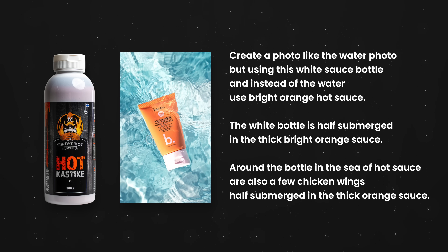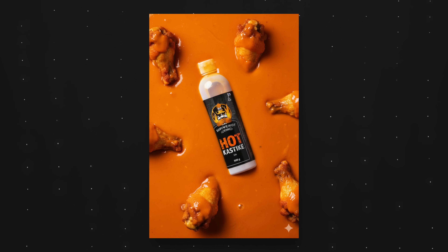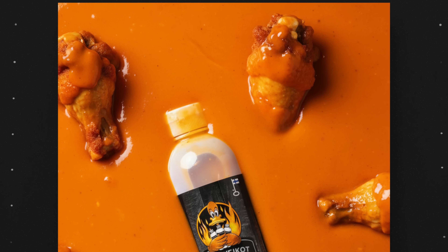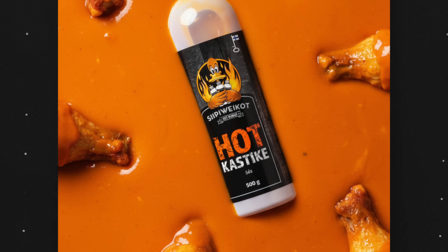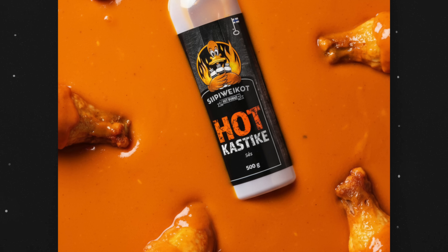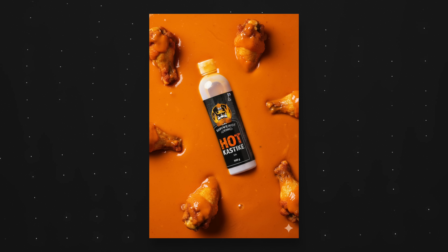I gave NanoBanana those two images and a prompt, and this is the result it came up with. I have to say the first time I saw this image my jaw almost dropped. The label is again perfectly intact and the bottle is half floating in the orange hot sauce with chicken wings around it — this would be absolutely impossible to do in Photoshop only using this image as a reference. It even added sauce on the bottle cap so it really looks like the bottle has been inside the liquid.